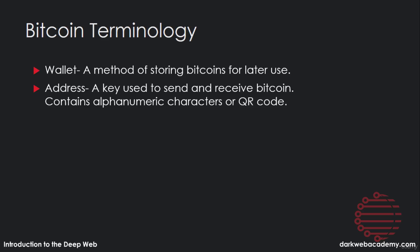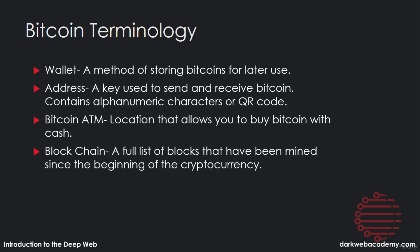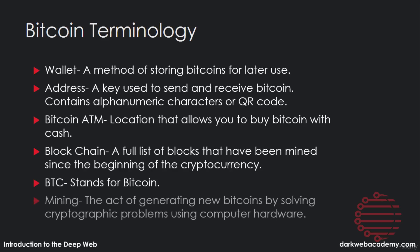An address is like your IP address or home address — it's given directly for a wallet, and anyone can send or receive money from that address. A Bitcoin ATM is a location that allows you to buy Bitcoin with cash, which is important for some people to remain anonymous. The blockchain is a full list of blocks that have been mined since the beginning of the cryptocurrency, and it also provides a transaction database. BTC stands for Bitcoin, and mining is the act of generating new Bitcoin by solving cryptographic problems using computer hardware.